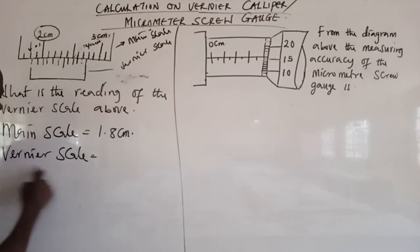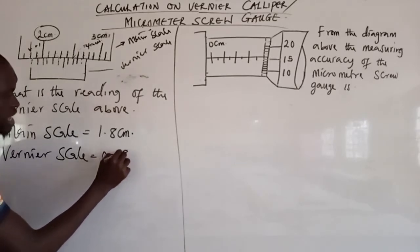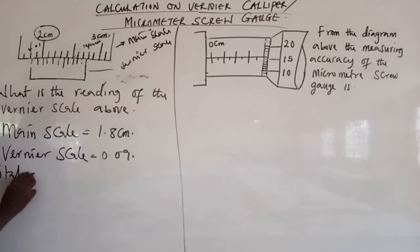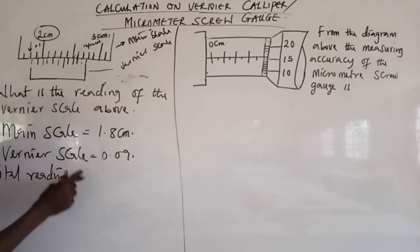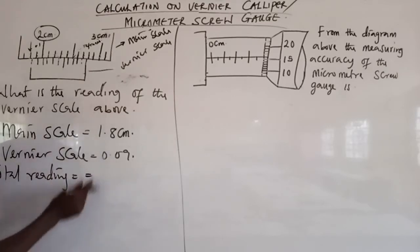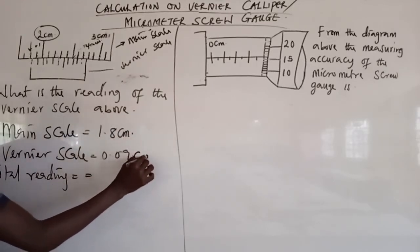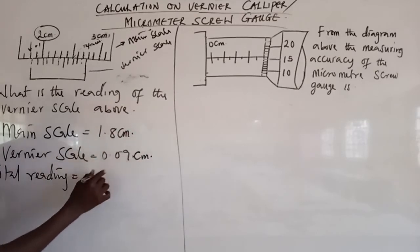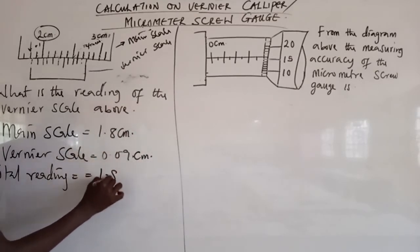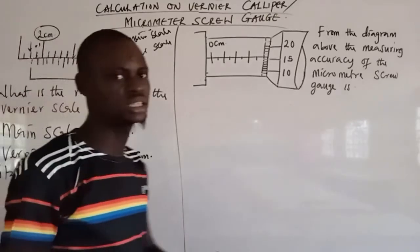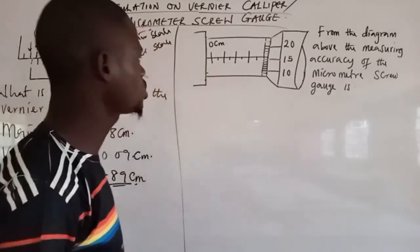The vernier scale reading is 0.09 cm. The total reading from both scales equals 1.8 plus 0.09, which gives 1.89 cm. That is the final reading on the vernier caliper.